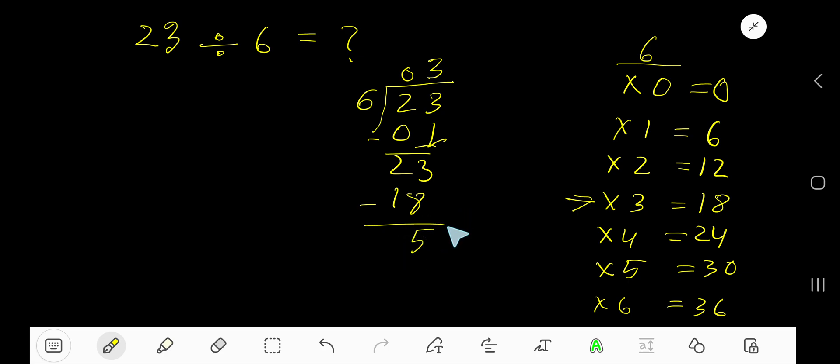Now your answer is 3 remainder 5. If you want to write your answer in decimal form, what will happen?